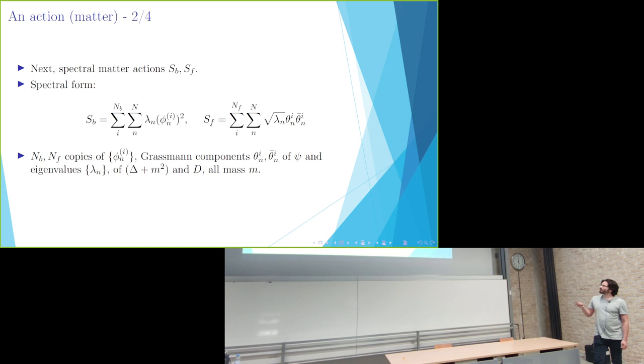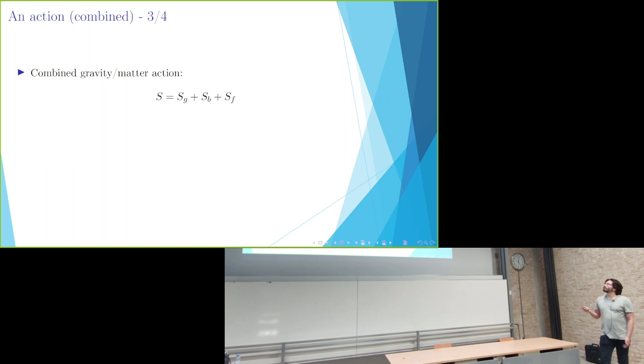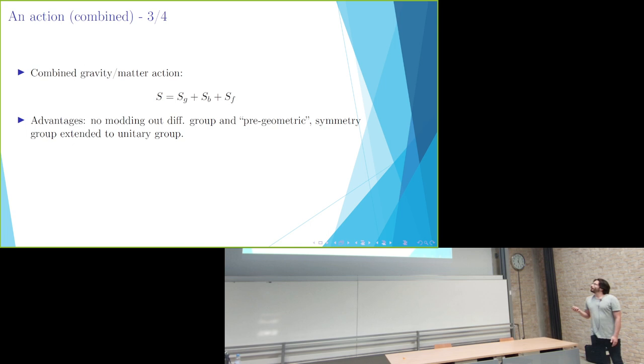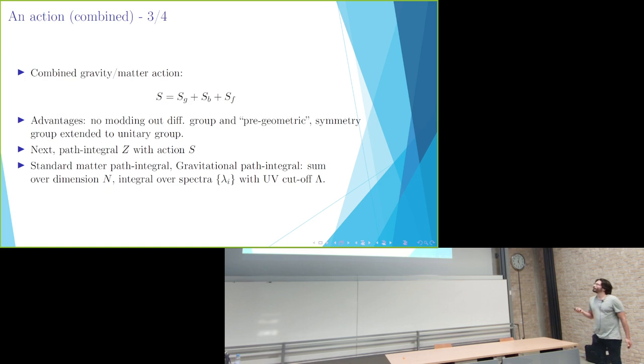These lambdas now represent the eigenvalues, not directly of the Laplacian, but of the wave operator. And the square root lambda is chosen to be the eigenvalues of the Dirac operator. So combining these ingredients all together, we have a gravity matter action which is fully in a spectral form. So we don't need to worry about modding out the diffeomorphism group. And actually its symmetry group is extended to the full unitary group.